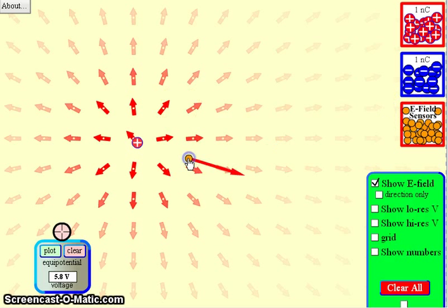You can grab an electric field sensor, and it gives you an idea of the strength of the field at a location. Notice how it gets weaker farther away, stronger close in, and it shows you the direction of the electric field at any given point.